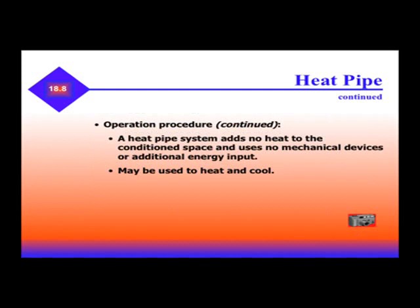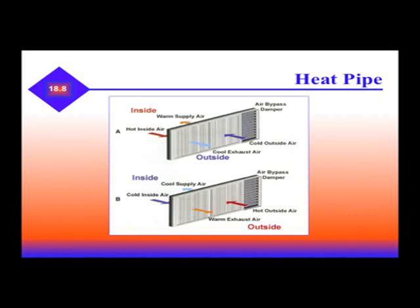It can be used to heat or cool. This is an example of a heat pipe: cold outside air comes in as warm supply air, and hot inside air goes out as cool exhaust air. In other words, it's a heat exchanger.